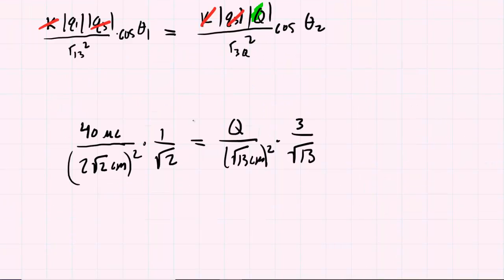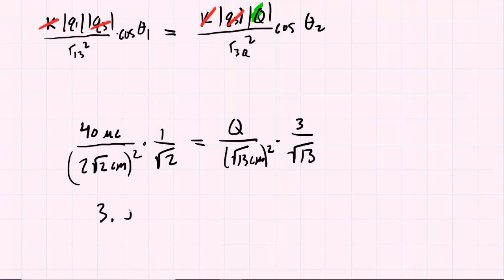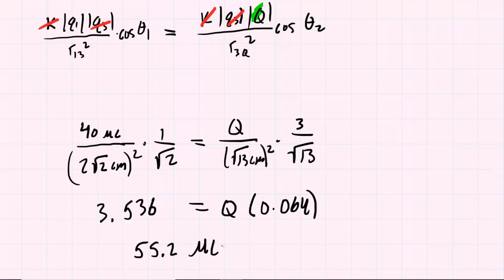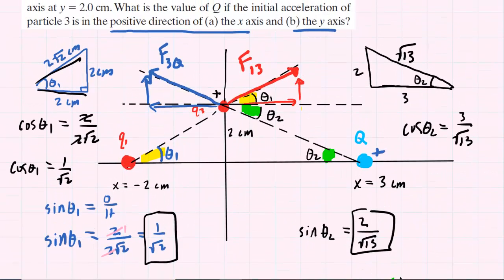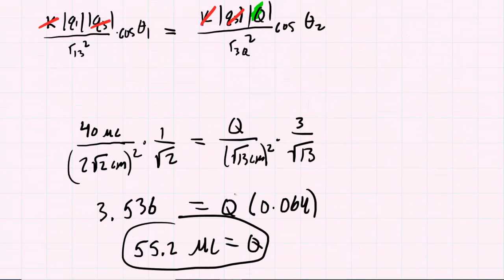We set up similar expressions for the two x-components and equate them to solve for capital Q. Note that capital Q will turn out to be positive. When we crunch the left-hand side using cosine of theta 1 and cosine of theta 2, we again get 3.536. The right-hand side becomes Q times 0.064. Dividing both sides by 0.064, we find that capital Q is 55.2 microcoulombs. Since F3Q was a repulsive force — Q3 was being pushed away from capital Q — and Q3 is positive, capital Q must also be positive to create a repulsive force. So the final answer to part B is positive 55.2 microcoulombs.